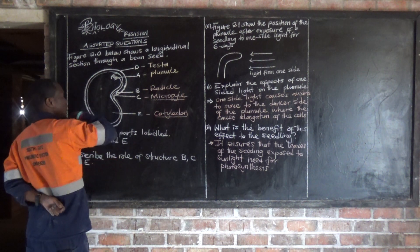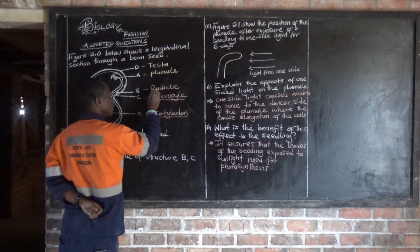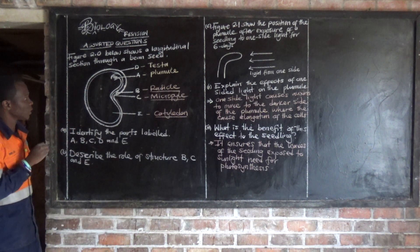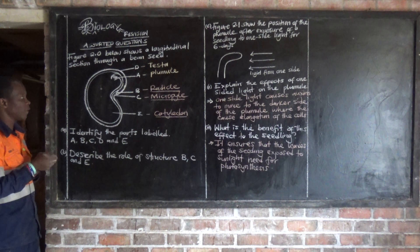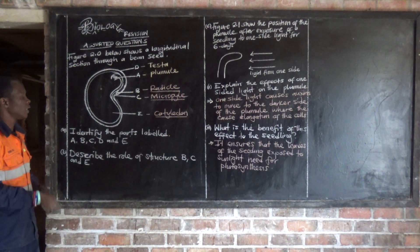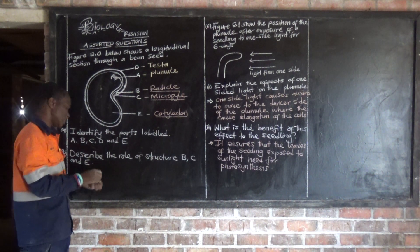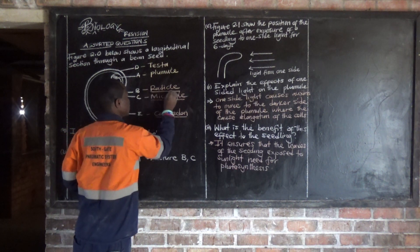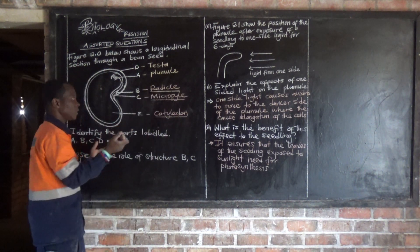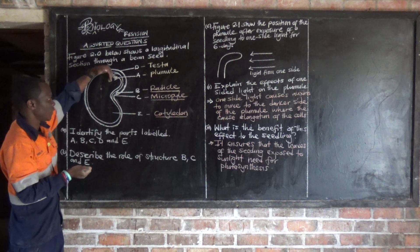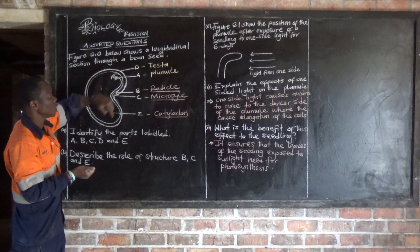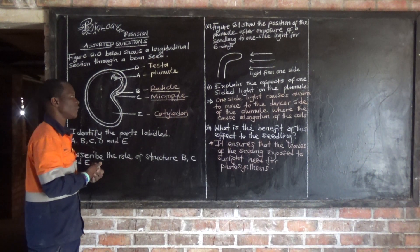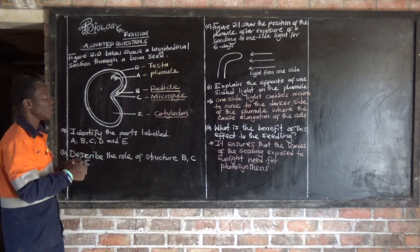The micropub is a small opening where water enters through as it enters the seed. Then our radical — this is the part which develops into the root system after germination. So after germination, the radical develops into the root system.